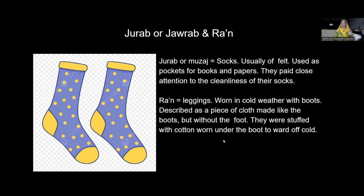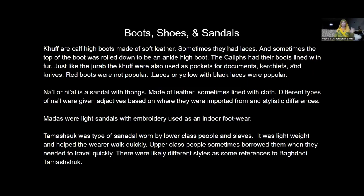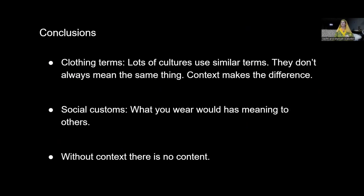Jarab or jarab and ron are socks and leggings, usually felt. The socks were worn indoors — you'd remove your leather outer boots and keep the felt inserts on inside. Ron or leggings are described as made exactly like a boot but without the foot; they were stuffed with cotton in winter to help keep warm, so presumably you have a tighter pair and a looser pair for stuffing. There are three or four more words for boots and sandals, and I've made those available in the PDF. I'll open up for questions now.